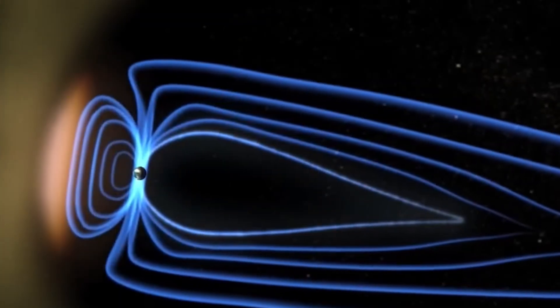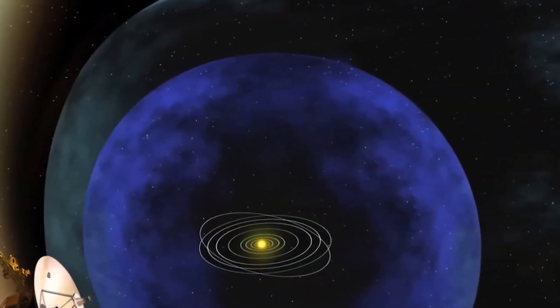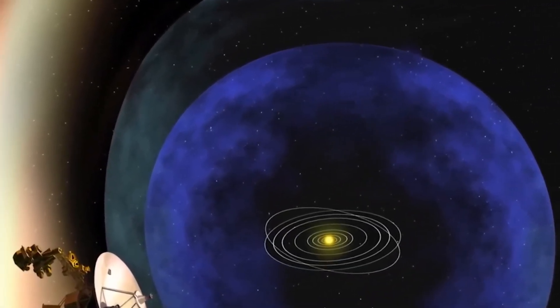Scientists are using its data to chart the first-ever galactic GPS, not for navigation through planets, but through radiation zones, magnetic boundaries, and invisible cloudlets.